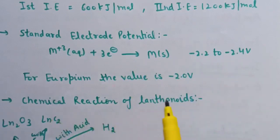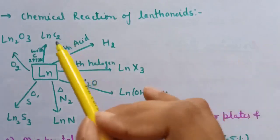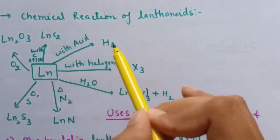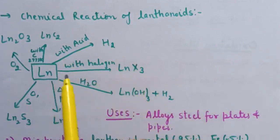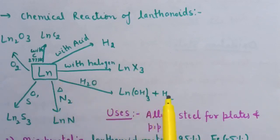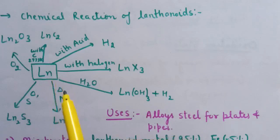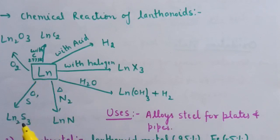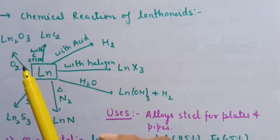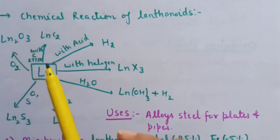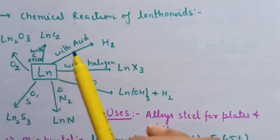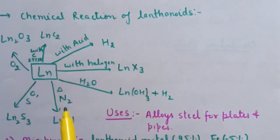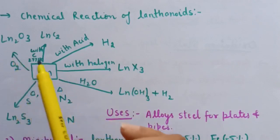Chemical reactions of lanthanoids: with acid, they liberate hydrogen gas. With halogen, they form LnX₃ halides. With water, they form hydroxides and hydrogen gas is released. With nitrogen, they form LnN nitrides. With sulfur, they form Ln₂S₃ sulfides. With oxygen, they form Ln₂O₃ oxides. With carbon, they form LnC₂ carbides.